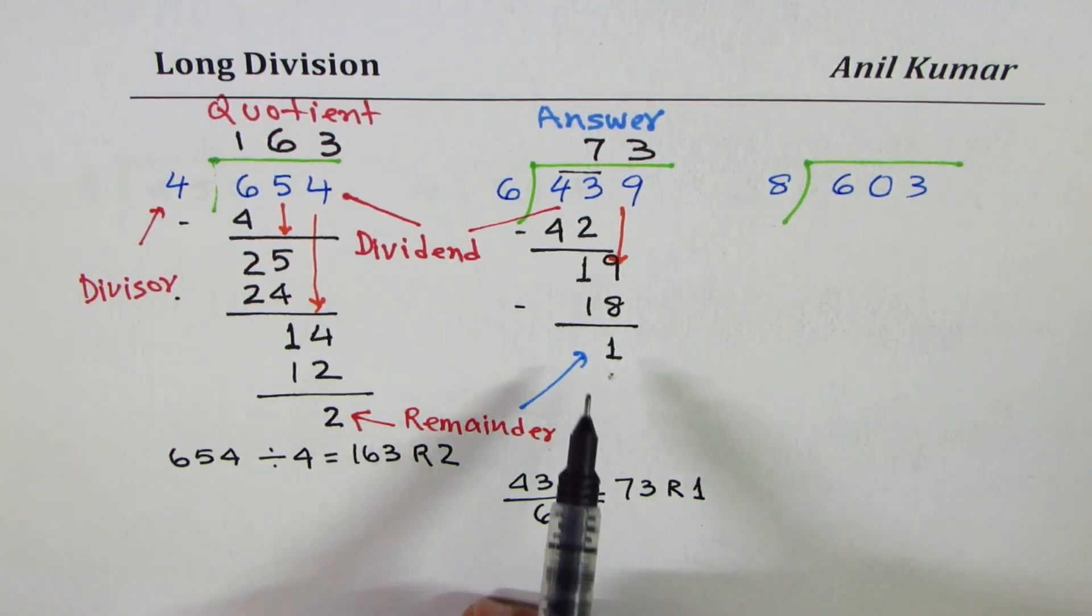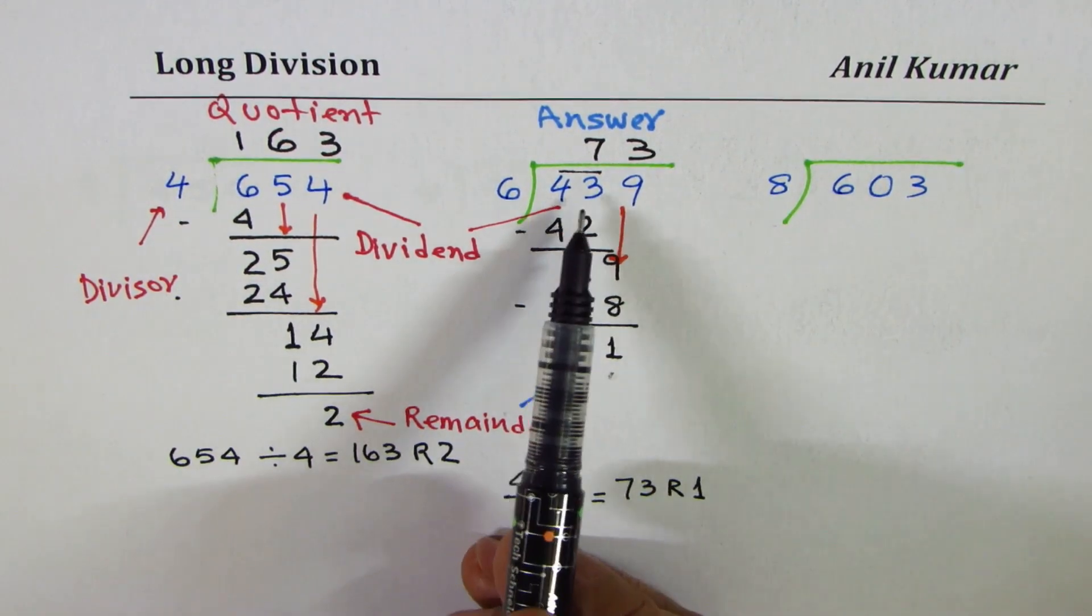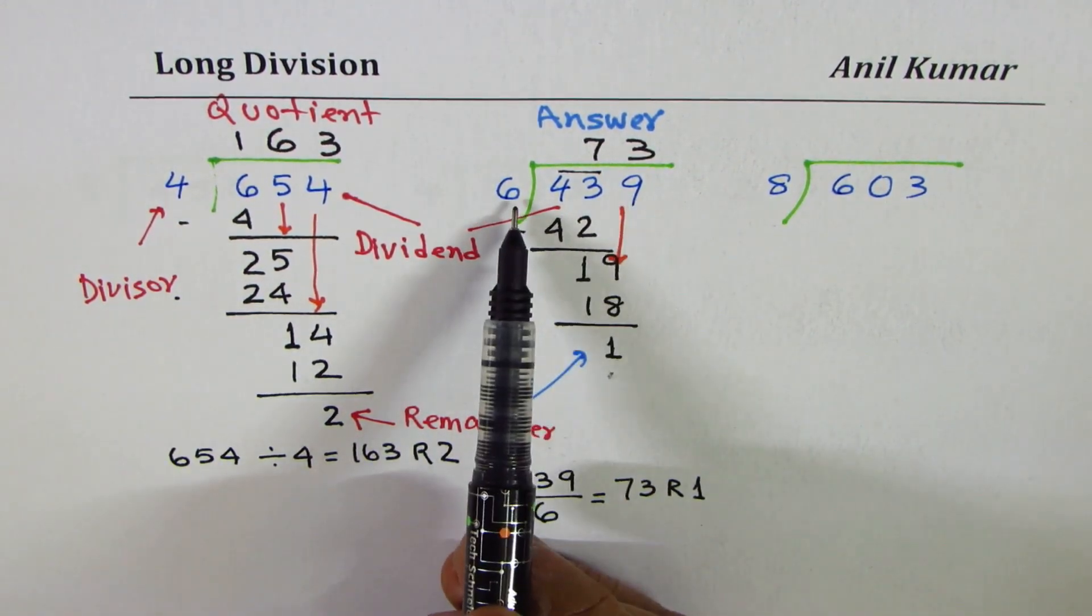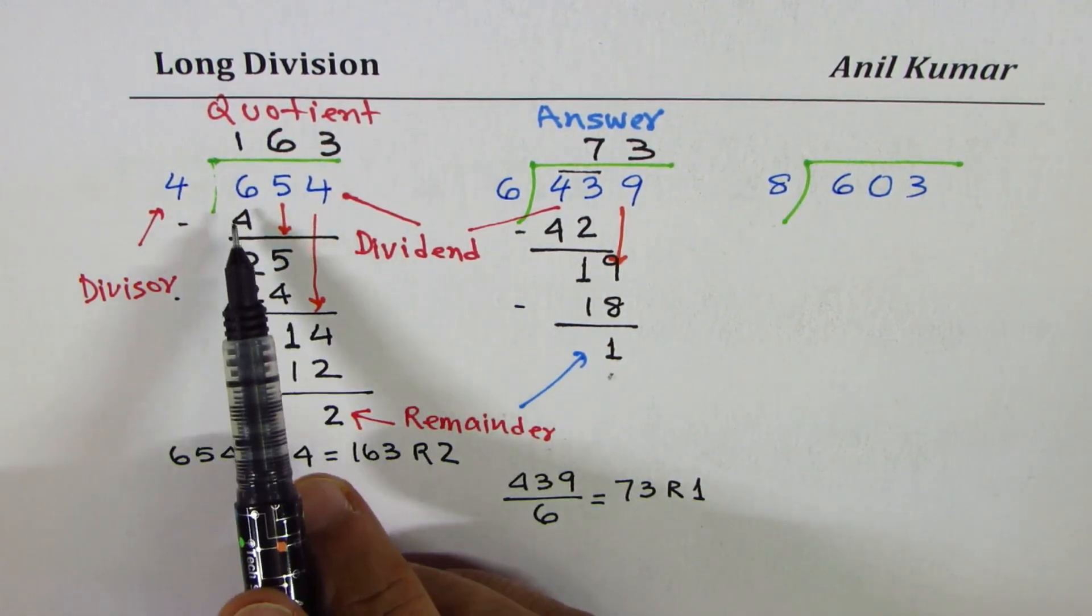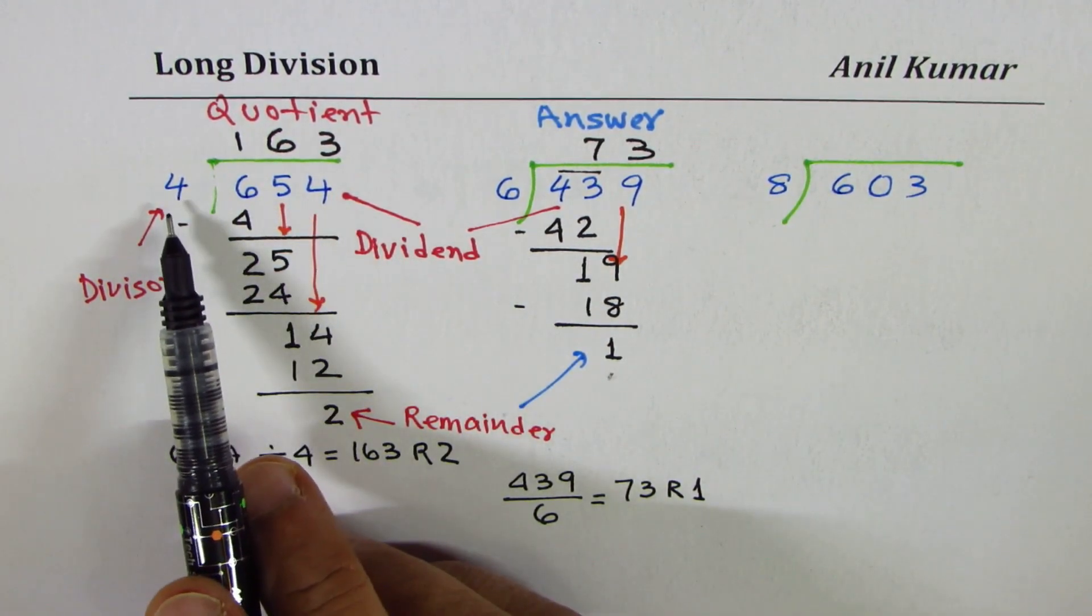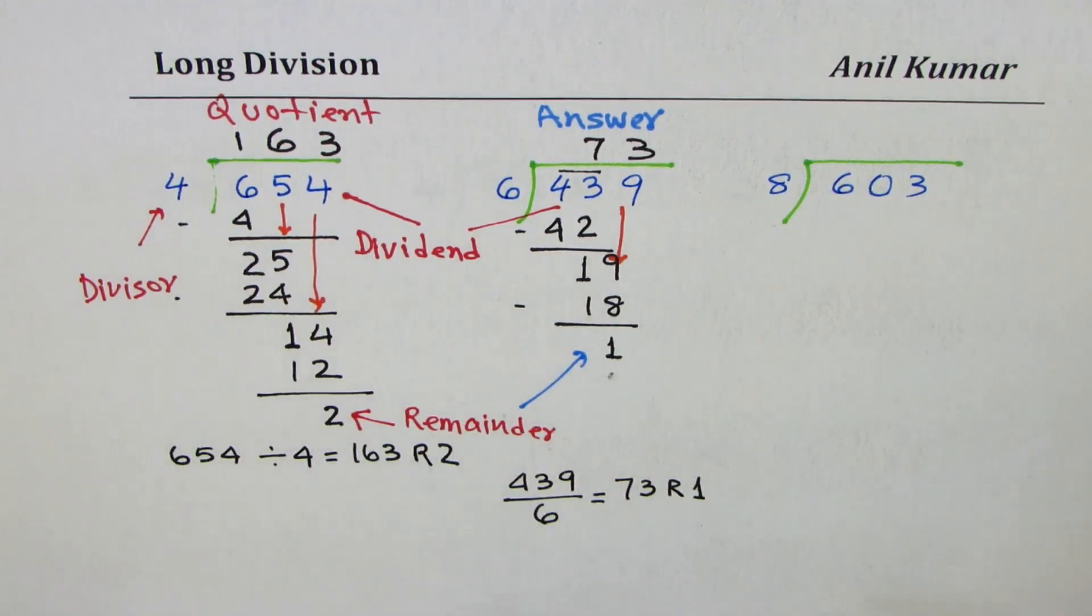If you get a remainder, that means 439 is not a multiple of 6. Here also, we got some remainder, so 654 is not a multiple of 4. Now let's do the next one.